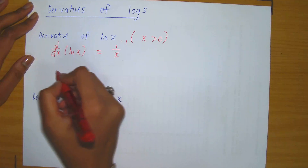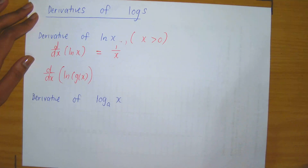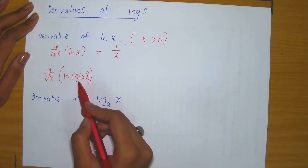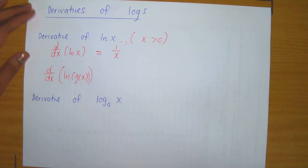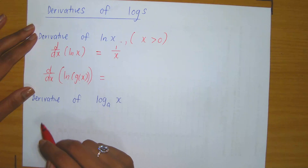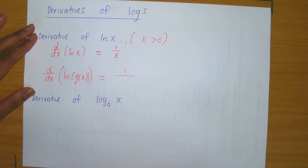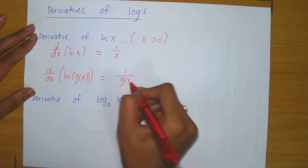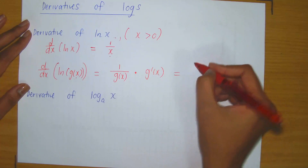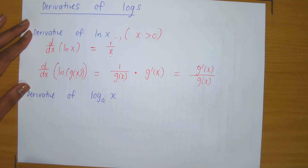Now there will be another case where we may have that we are computing the derivative with respect to x of ln applied to some function g of x. In this case, we need the intervention of the chain rule, because we can refer to g of x as the inner function and ln of x as the outer function. The chain rule tells you it's the derivative of the outer evaluated at the inner. The derivative of the outer is 1 over the variable, so it's 1 over g of x, multiplied by the derivative of g of x. This simplifies to the derivative of the inner function divided by the inner function — a neat formula to remember.